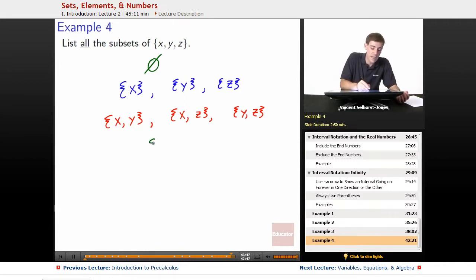And then finally, we've got x, y, z itself is a subset of itself. Because remember, by the formal definition of being a subset, it just means that all of the elements inside of your set show up in the other set. And every element x, y, z shows up inside of x, y, z, makes sense. So every set is a subset of itself.